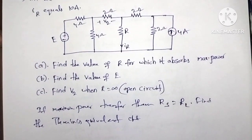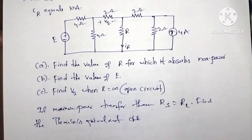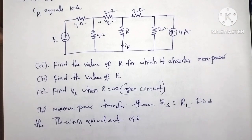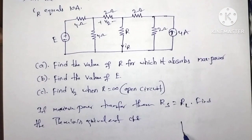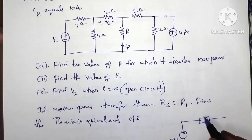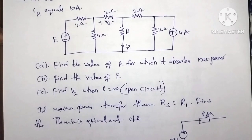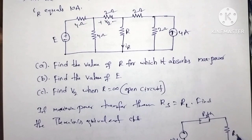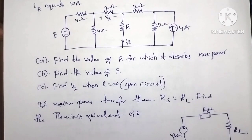To find the Thevenin's equivalent circuit, we first need to understand Thevenin's theorem statement. The Thevenin voltage Vth is in series with the Thevenin resistance Rth (or Zth) and the load RL. This is the Thevenin's equivalent circuit.